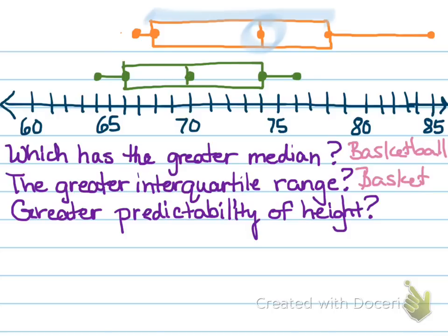Which one, though, has the greater predictability of height? When we talk about predictability, which one you could guess more easily, it's going to be the one that has the smaller range. Because if we were to guess a basketball player's height based on this, we could be very wrong. So we're looking for the one for predictability that has the smaller range. So in that case, the smaller range is going to be the baseball player.